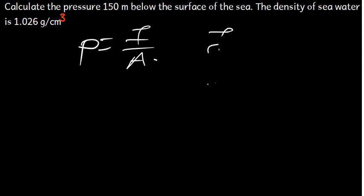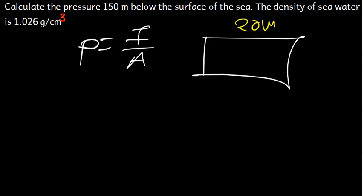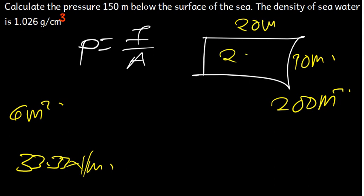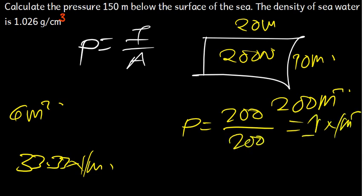Let's have a shape where we increase the area. Let's say this is 20 meters and this is 10 meters. The area is now 20 times 10, which gives us 200 meters squared. The force remains 200 newtons. So pressure is equal to 200 divided by 200, which gives us 1 newton per meter squared. As you can see, if you increase the area, the pressure goes down.